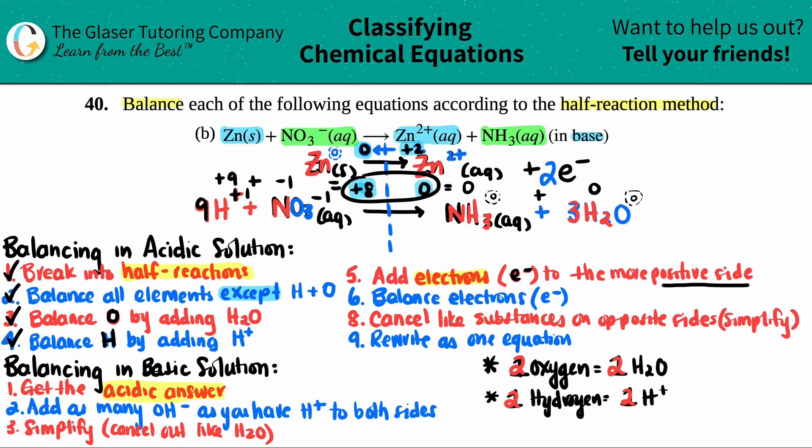Out of the two that are highlighted, plus eight and a zero, this is the more positive side. So I know that I'm going to add electrons to the left side. How many though? Well, how many on a number line do I go from eight to zero? There's eight numbers difference. So I know that I have to add an eight here. That step is balanced or that step is done.